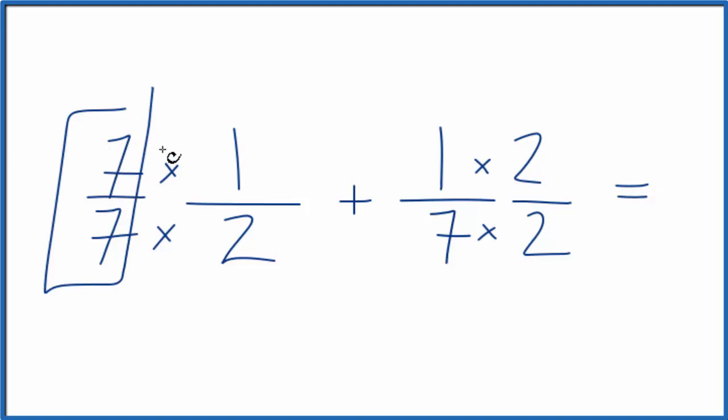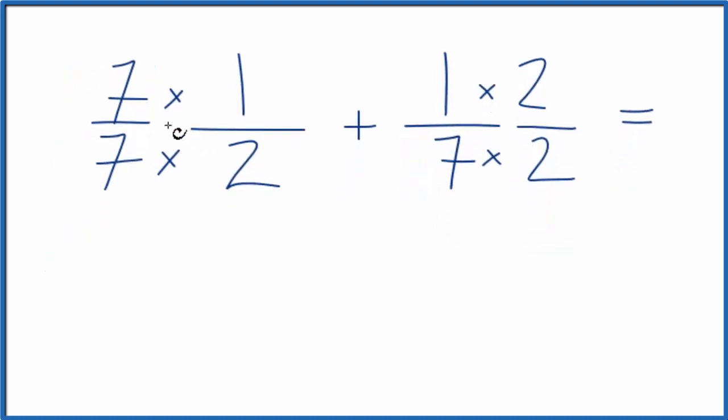Seven divided by seven would give you one. We're just multiplying by one. But now seven times one is seven, seven times two is fourteen, plus one times two is two, seven times two is fourteen. We have that common denominator.